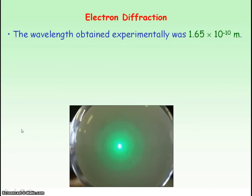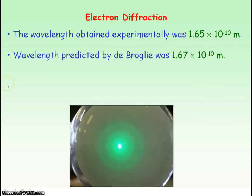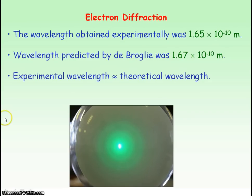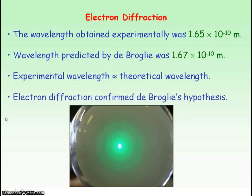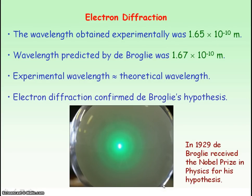The wavelength obtained experimentally from the electron diffraction experiment was 1.65 × 10⁻¹⁰ metres, and the wavelength predicted by de Broglie from his hypothesis was very similar. So electron diffraction confirmed de Broglie's hypothesis, and he won a Nobel Prize in Physics for it.